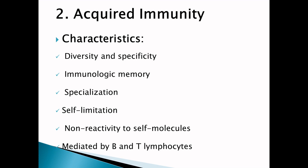Among the characteristics of acquired immunity: it has diversity and specificity, it has immunological memory (which was absent in innate immunity), it is specific to the type of invader infecting the body, it has self-limitation, and it is non-reactive to self molecules — meaning the characteristic of discrimination between self and non-self persists here as well. It is mediated by B and T lymphocytes.